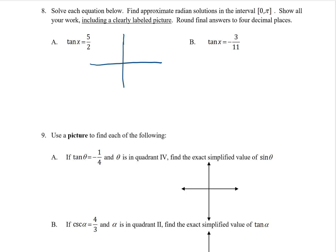Tangent is positive in the first quadrant and negative in the second quadrant, so I know I'm going to be drawing a first quadrant picture. Tangent is opposite over adjacent, so here's the angle I'm looking for, and it is between 0 and pi. I don't have any way to find it by hand, but that angle is in the zone for the inverse tangent function. Inverse tangent knows about angles between negative pi over 2 and pi over 2, so all I have to do is go to the calculator.